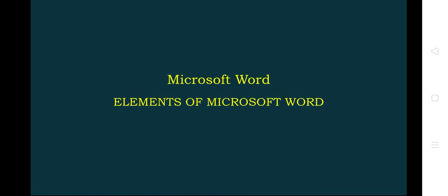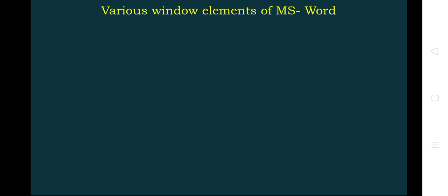Hello everyone. In this video we are going to see the elements of Microsoft Word screen. We know that Microsoft Word is a software which helps us to create a document in a neat manner. Let us see the various window elements of MS Word. The first one is the title bar, next is the menu bar.